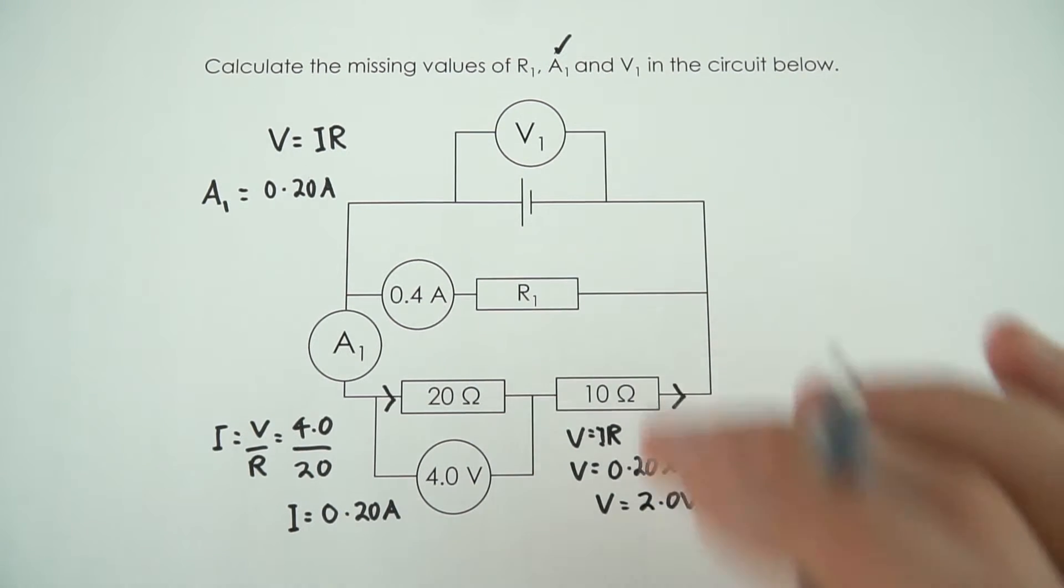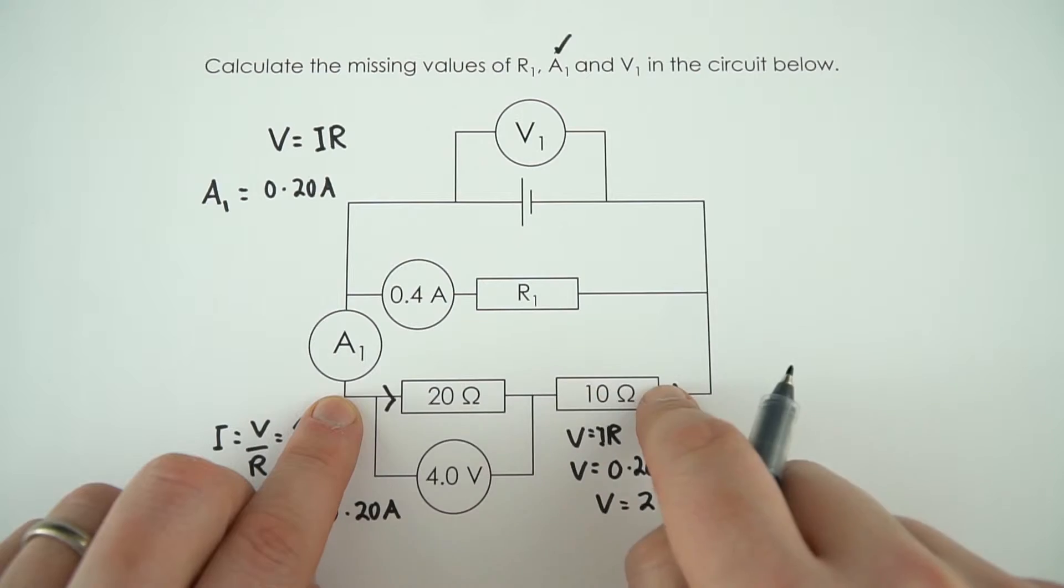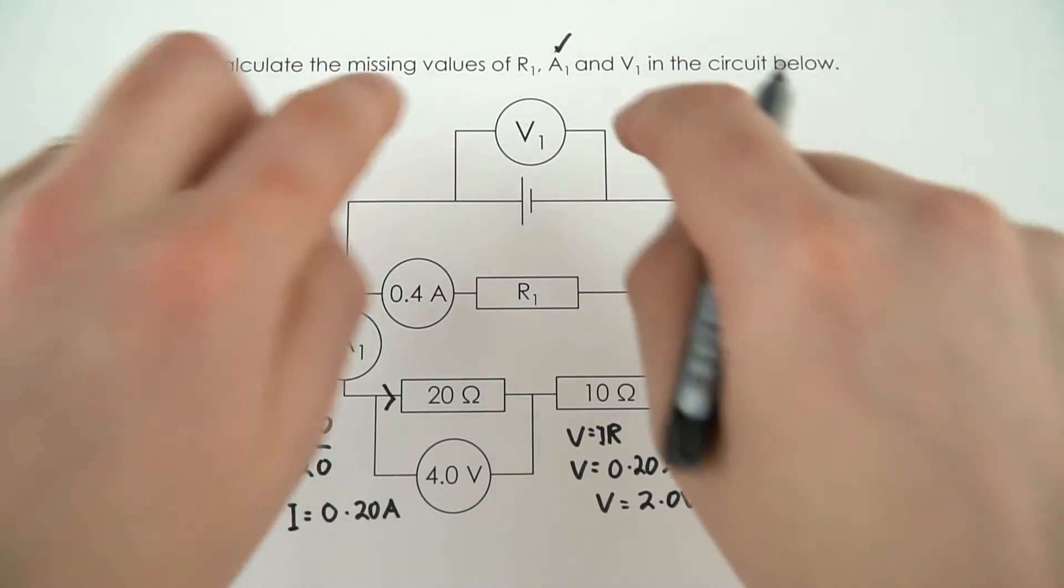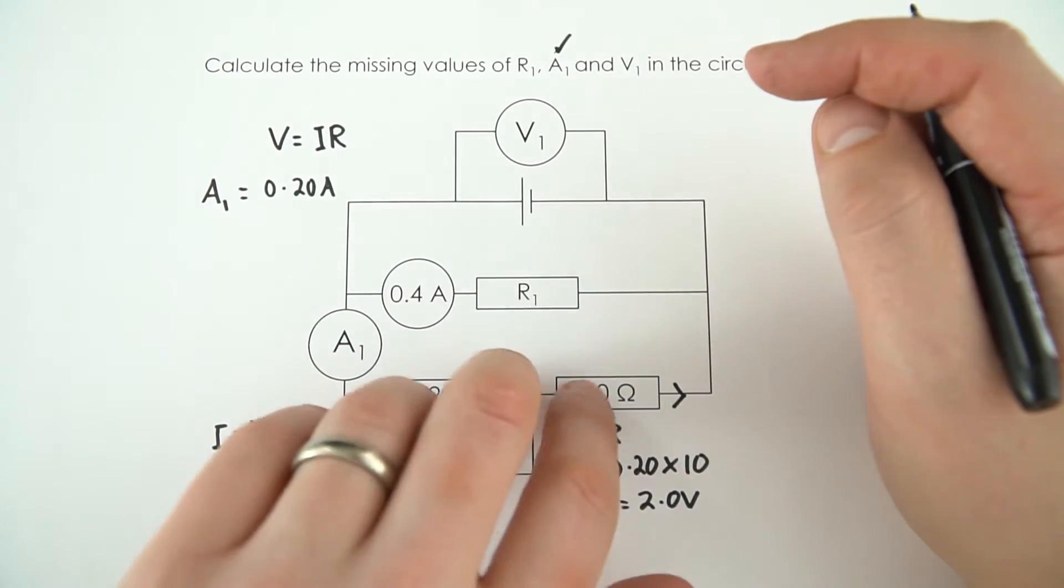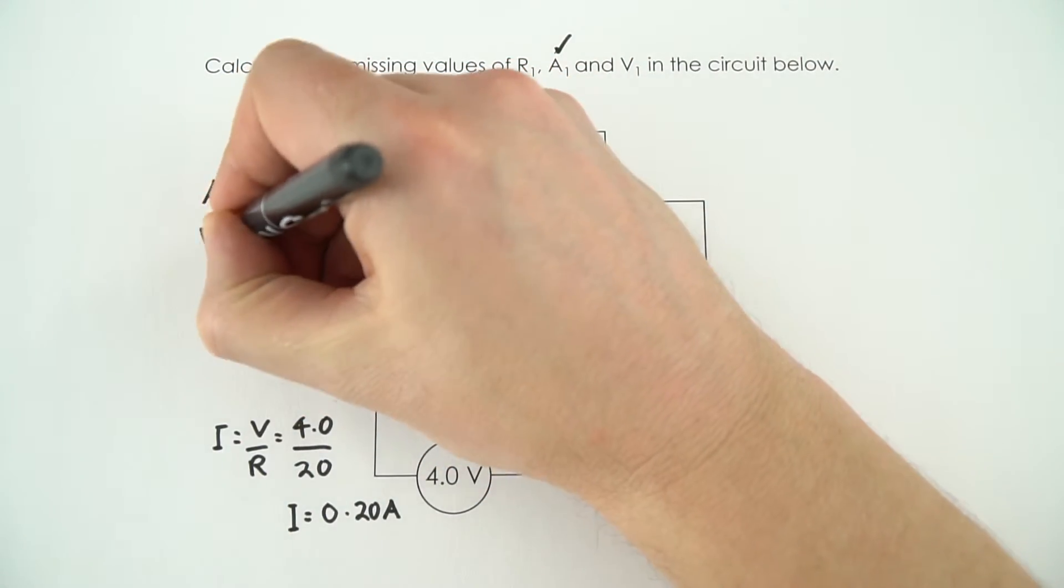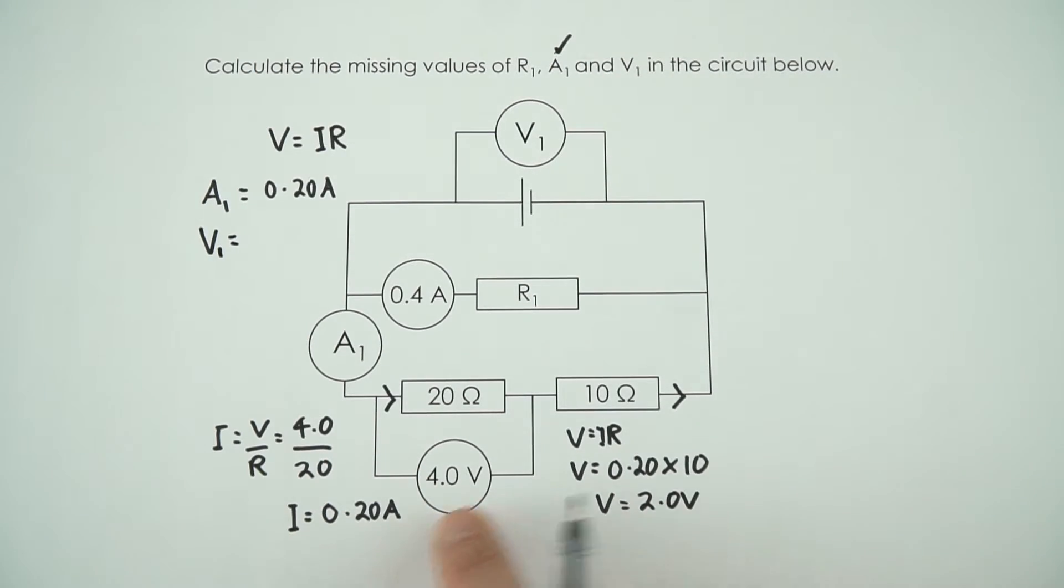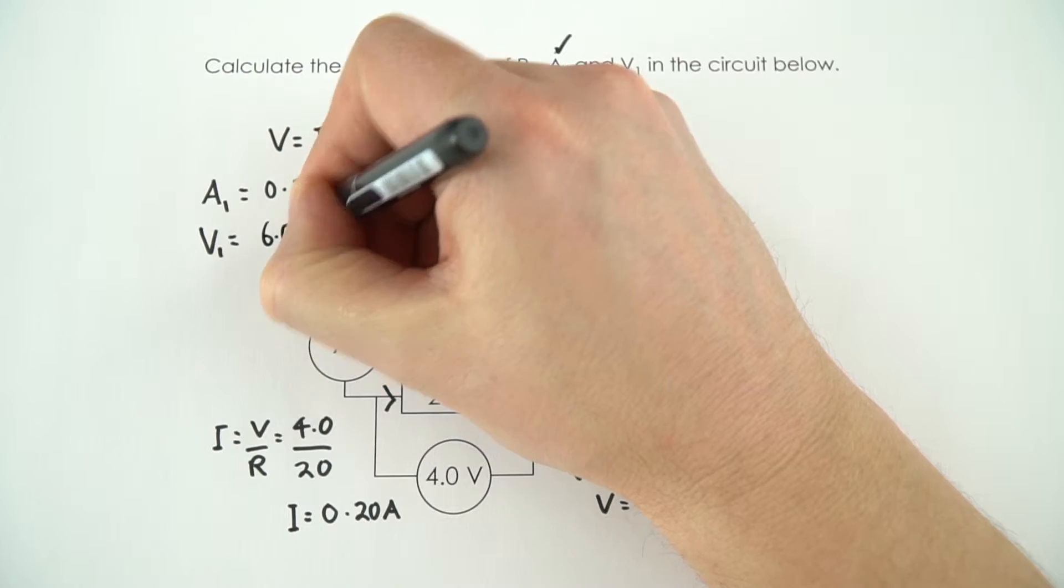Now we're not asked to find this in the question, but it's a useful piece of information, because if we know the potential difference across this and the potential difference across this, this must equal the potential difference across this, because the potential difference that any loop in a circuit is going to be the same as the source. So that means the value of V1 is going to be equal to 4.0 plus 2.0, which is equal to 6.0 volts.